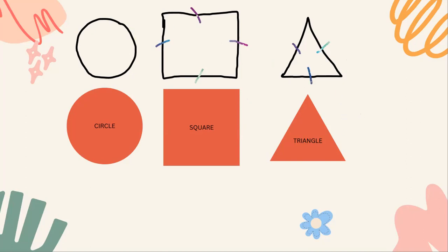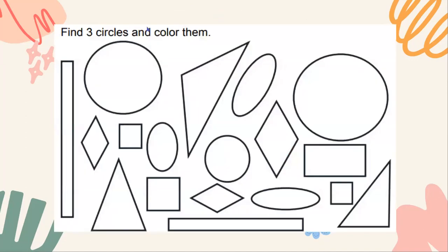Let's jump into our shape scramble and I need your help. We have to find certain shapes. Can I get a big thumbs up if you guys are up for the challenge? We're going to find three circles and color them. There's a lot of shapes on here — this is a little tricky. I'm going to point to a shape and you guys let me know if it's a circle or not by giving me a thumbs up or a thumbs down.